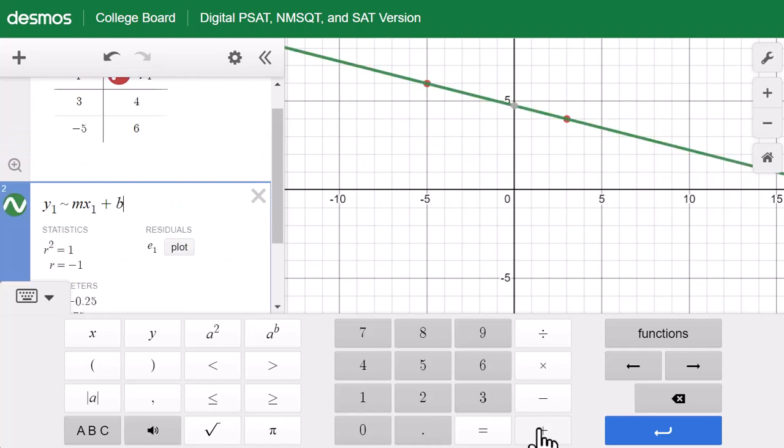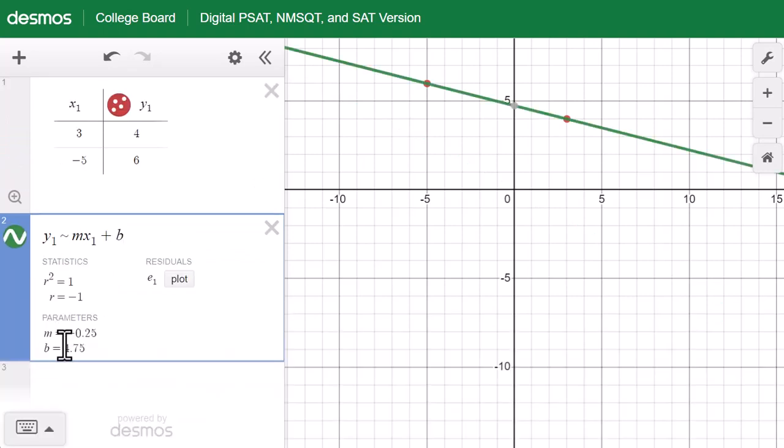You can type b here. Slope equals negative 0.25. b equals 4.75.